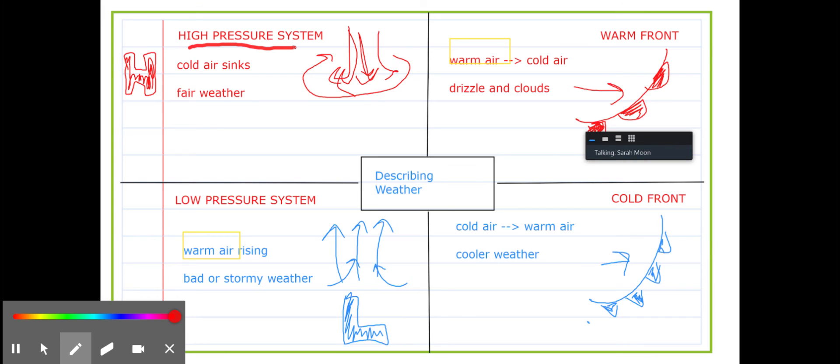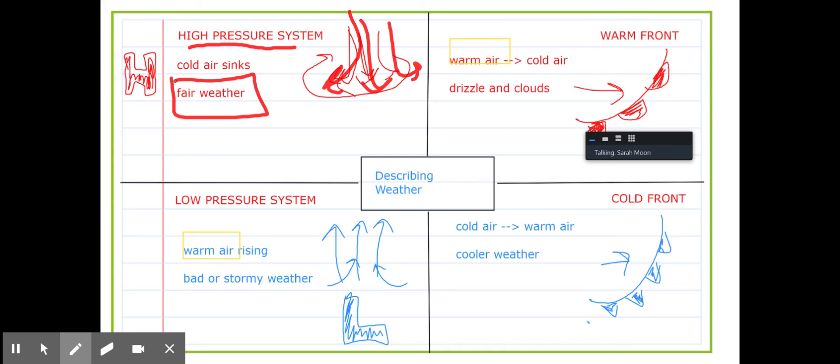With a high pressure system, my cold air is sinking. So remember, my air is going down like this and I'm going to get fair weather. Remember we talked about high pressure - my thumb would be going up to show high, just like a thumbs up, and so it's nice weather, thumbs up, high pressure, fair weather.